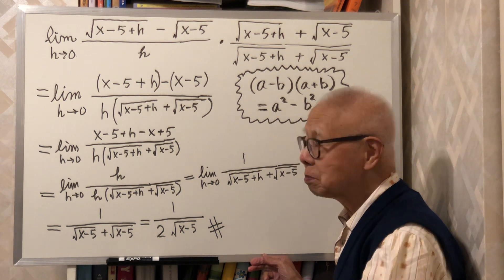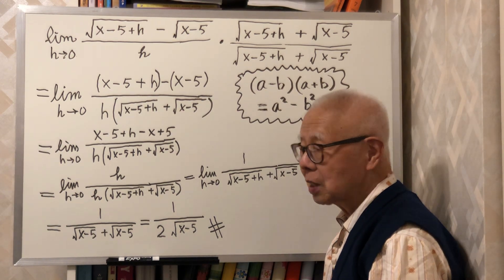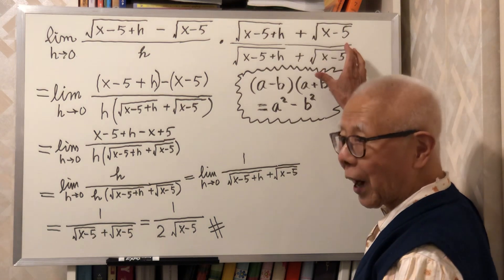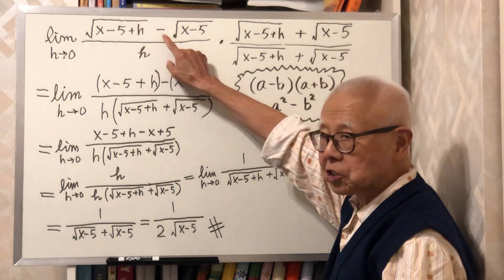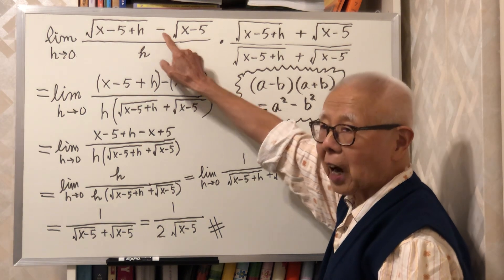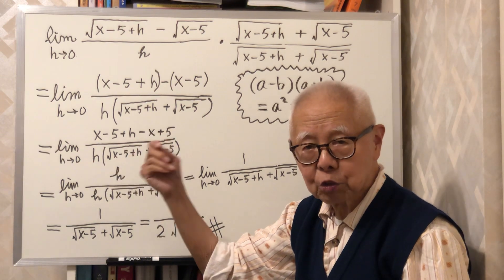Do you follow? The most important step is to multiply a factor which is 1, but I change the minus to a plus sign. And I am going to use the formula, the difference of two squares.